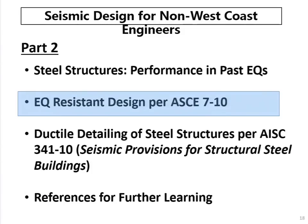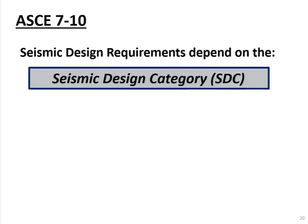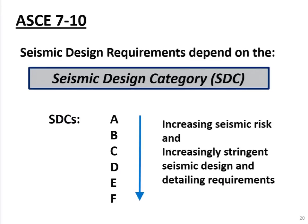Taking a look at ASCE 7-10 — we'll soon have ASCE 7-16. When you go into the earthquake provisions in ASCE 7, what controls absolutely everything is what's called the Seismic Design Category. After working through ASCE 7, a particular building at a particular site is assigned a seismic design category: letters A through F. As you move up the alphabet, we have higher seismic risk, and design requirements become increasingly stringent. The starting point in seismic design is to figure out your seismic design category.